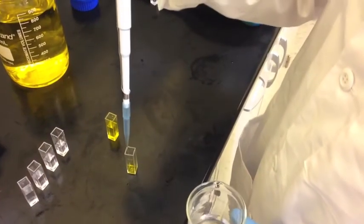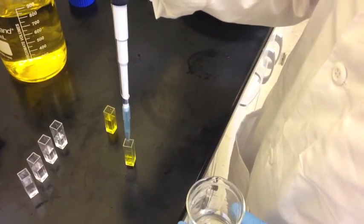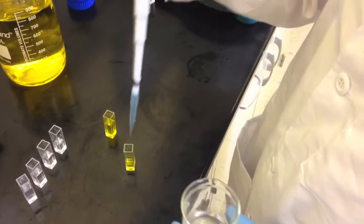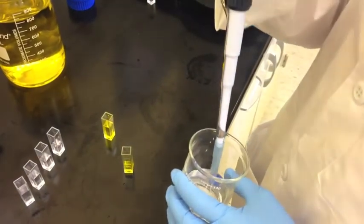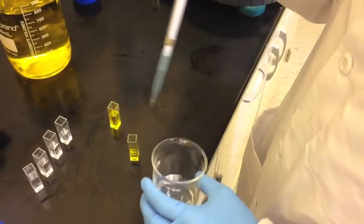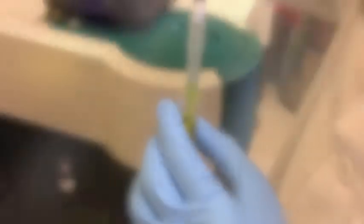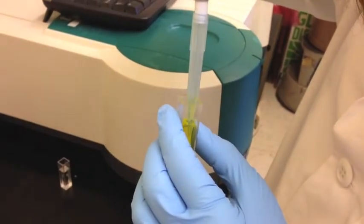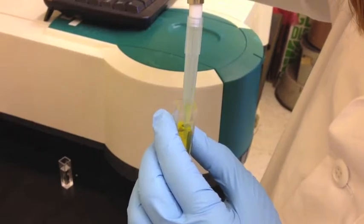A calibration curve for tartrazine was then made for the spectrophotometer at 427 nanometers. A calibration curve was made by diluting tartrazine solution and measuring the absorbance, until an absorbance of 0.25 to 0.1 was found. When diluting the solution with DI water, it is important to make sure it is well mixed.